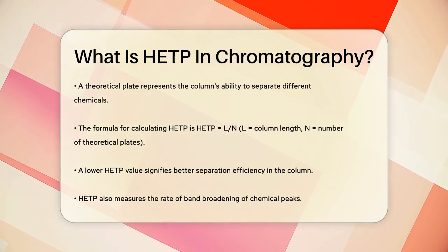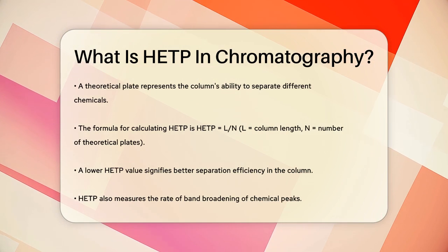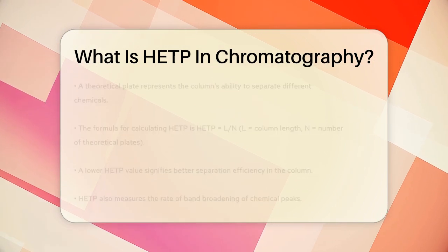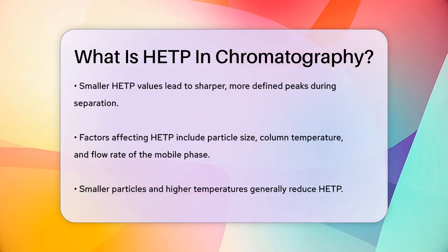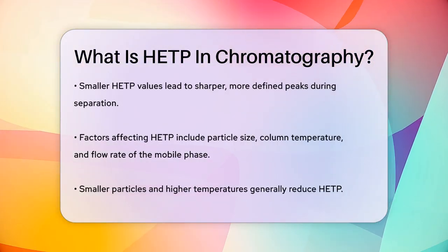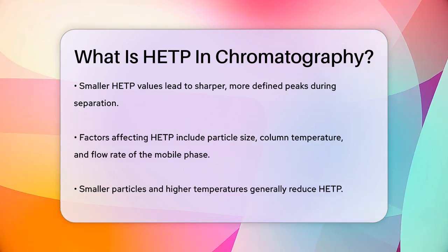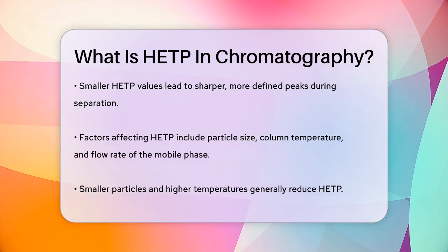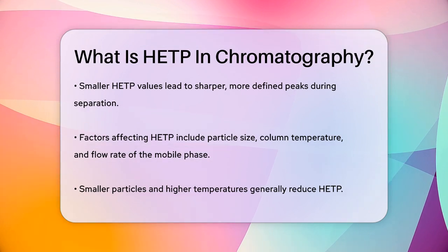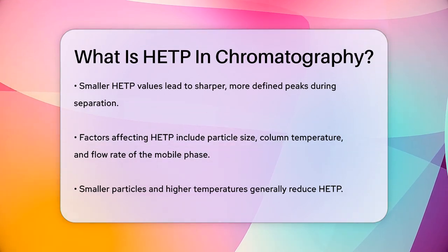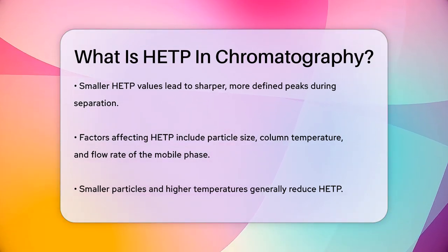HETP is also a measure of the rate of band broadening. As chemicals move through the column, their peaks or bands can spread out, making them less distinct. A smaller HETP indicates slower band broadening, resulting in sharper, more defined peaks.